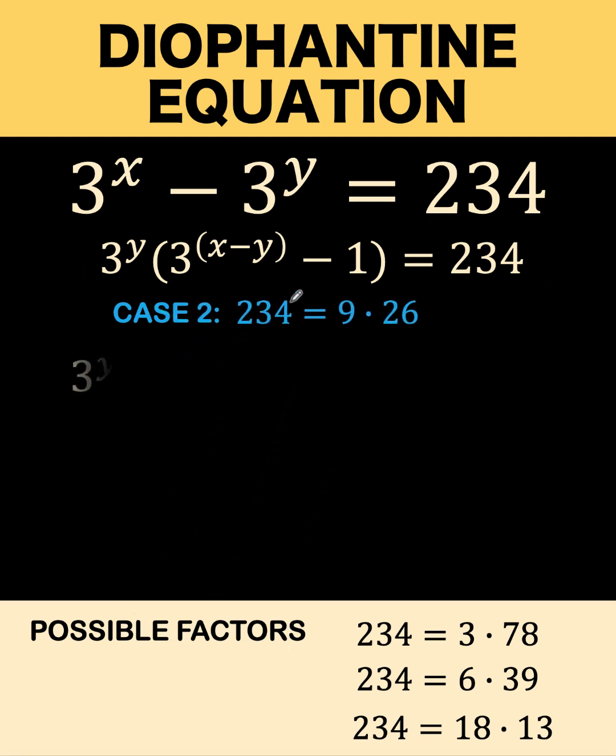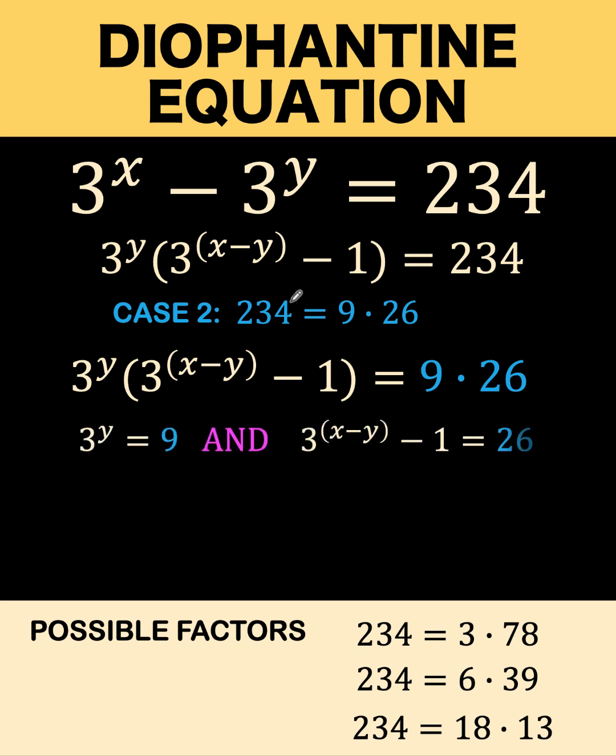So equate the first factor to 9, the second factor to 26. 3 raised to y equals 9. So clearly, y must be 2, so that 3 raised to 2 equals 9.